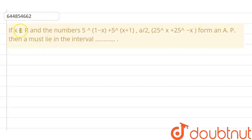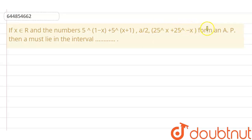In this question, it is given that x belongs to R, and the three terms — 5 to the power (1−x) plus 5 to the power (x+1), a/2, and 25 to the power x plus 25 to the power (−x) — form an AP. We have to find the interval in which a lies.